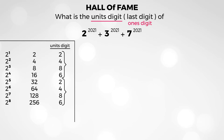So if I want to find the units digit of 2 to the power of 2,021, do I have to keep computing? No. You just have to look at the pattern. The 4th units digit in the cycle is 6, which means every time the exponent is a multiple of 4, the units digit will be 6.